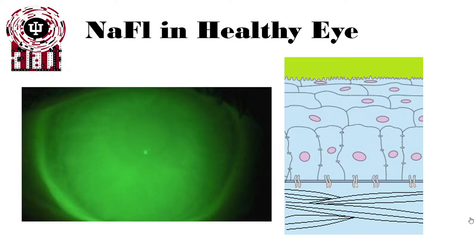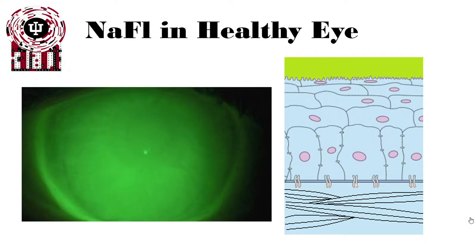This is being excited with the cobalt blue light from our slit lamp or biomicroscope. We can see a uniform appearance of the dye — that's ultimately the tear film over the cornea and conjunctiva. We see that uniform appearance because a normal, healthy, intact corneal epithelium, stroma, and endothelium form a smooth, even layer floating across the epithelial surface.